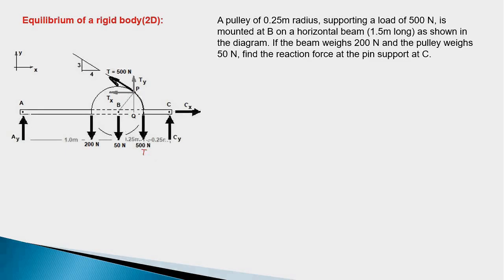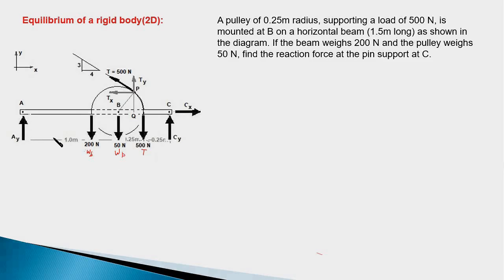The 200-newton force is the weight of the beam, which acts at the center point of AC, so this distance will be 0.75 meters — that is W_beam. The 50-newton force is the weight of the pulley, W_p. These are all the forces acting. There are three unknowns, and since this is a 2D structure with three equilibrium equations, we can solve it.